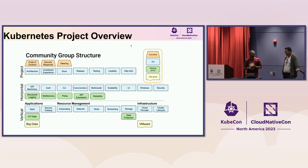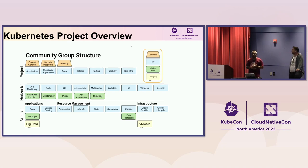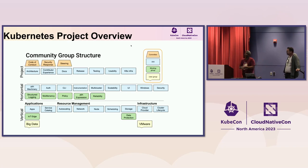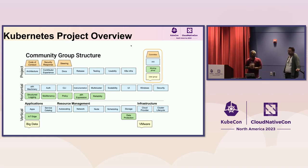It's important to understand the structure of how we work in the community. Special interest groups are essentially domain experts — networking, storage, security, scalability, Windows, authentication, CLI. Those are areas where people know what they're doing: SIG CLI writes the CLI, authentication folks work on authentication and authorization, and networking folks are deep in the weeds on all network use cases. But how do you tie all of these together? That's where SIG Architecture comes in.